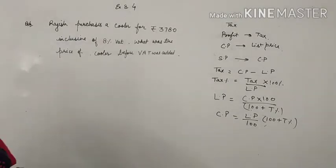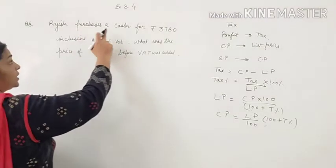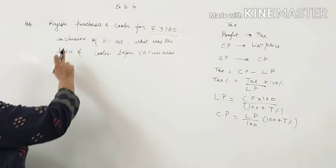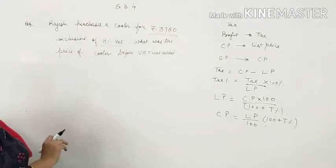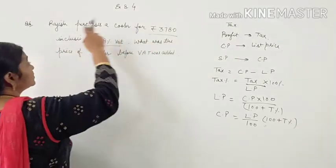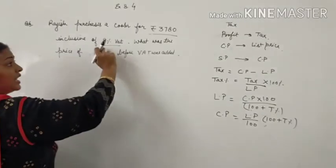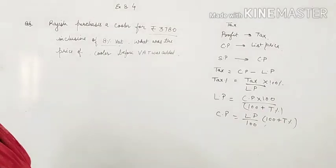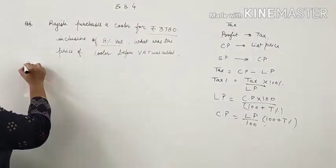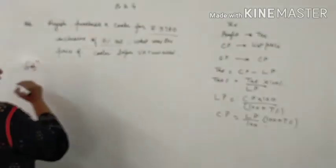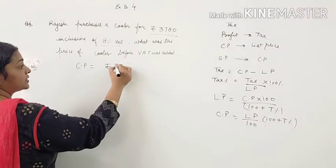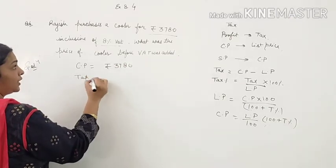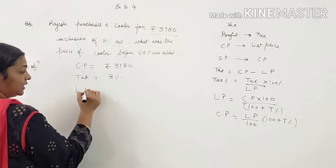See what is given in this. Rajesh purchases a cooler for Rs. 3780 inclusive of 8 percent VAT. That means this is the cost price of Rajesh which includes the VAT. What about the price of cooler before VAT was added? That means we need to find the list price. So what is given: cost price is Rs. 3780, tax is 8 percent. You need to find the list price.